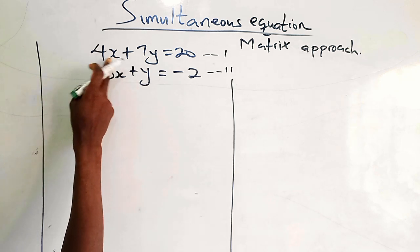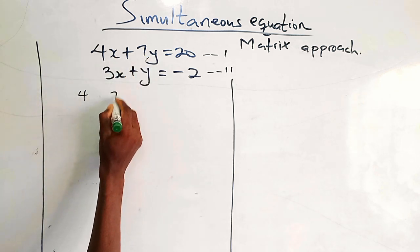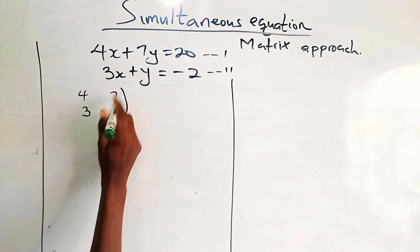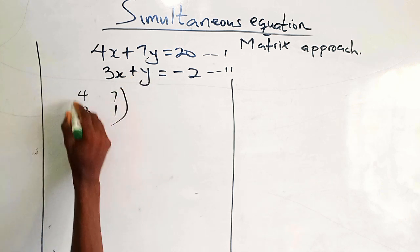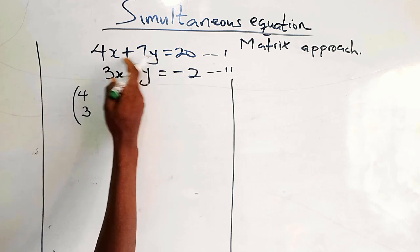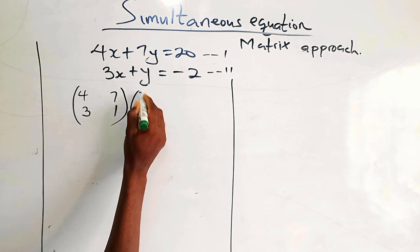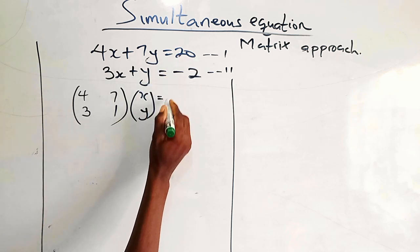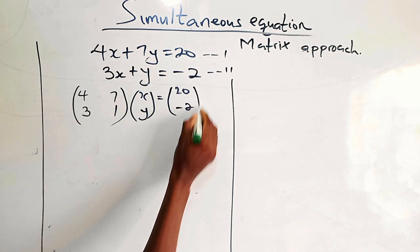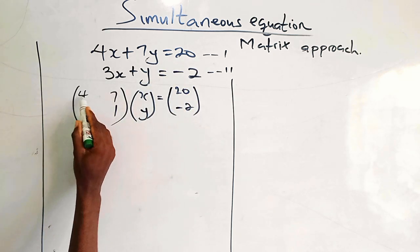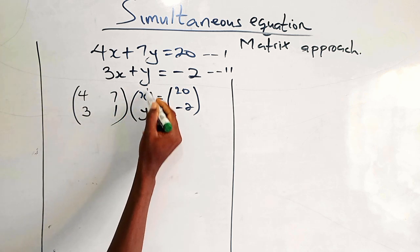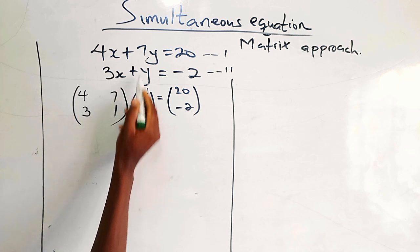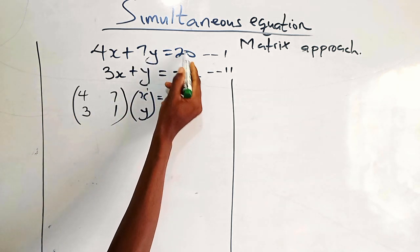For x, I have the coefficient to be 4, and y has to be 7. Here I have 3, and the coefficient of y is 1. So the two variables I am working with are x and y. I have it here: x, y equals — my result here is 20 and minus 2. You multiply this row with this column and you still have 4 times x is 4x plus 7 times y equals 20.